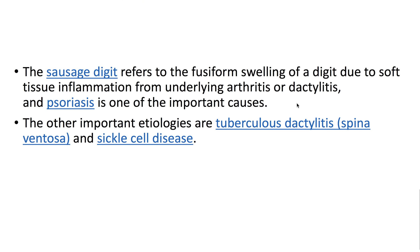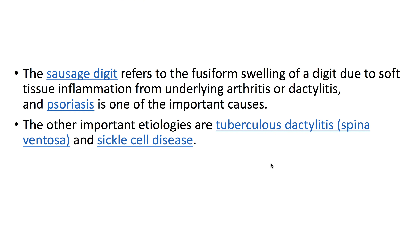The Sausage Digit refers to the fusiform swelling of a digit due to soft tissue inflammation from underlying arthritis or dactylitis, and psoriasis is one of the important causes. The other important etiologies are tuberculosis dactylitis and sickle cell disease.